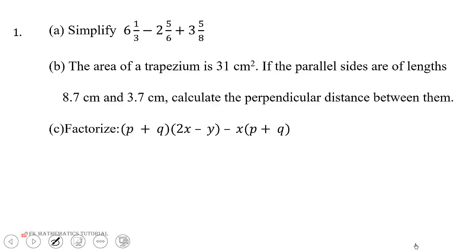Let's look at the b part. The area of a trapezium is 31 centimeters squared. If the parallel sides are of lengths 8.7 centimeters and 3.7 centimeters, calculate the perpendicular distance between them.